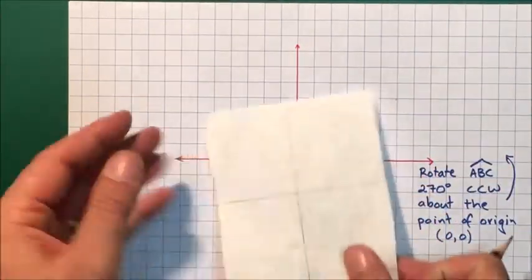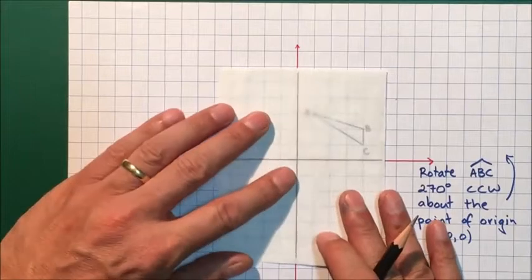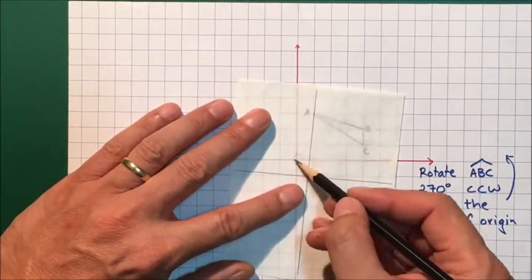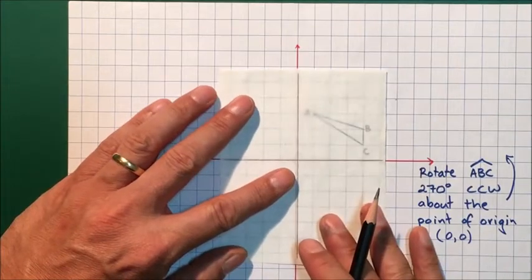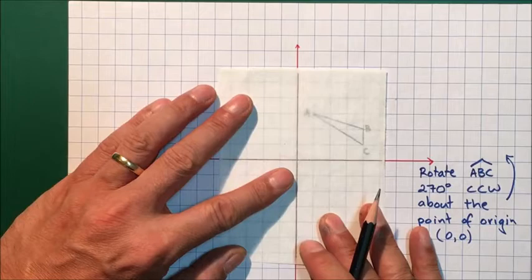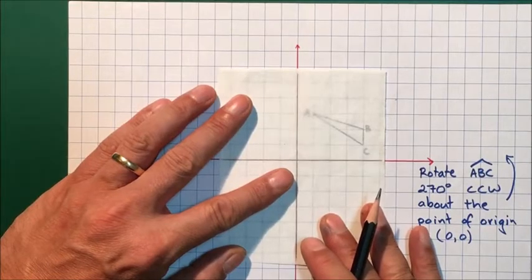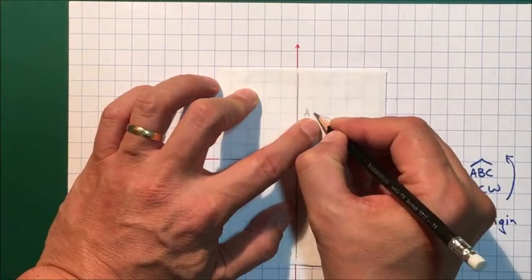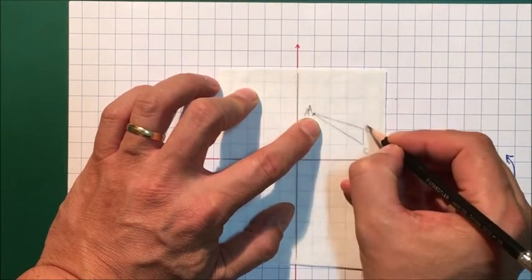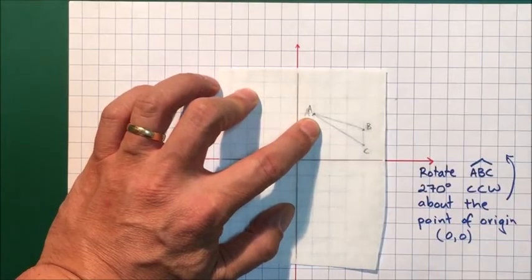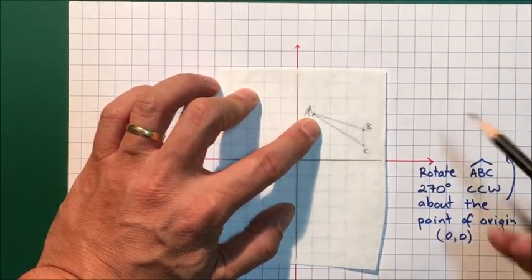Here's my axes. I align everything so this point here, which is (0,0), needs to be aligned with that (0,0) on the axis. Everything's pretty much lined up with the axis underneath. Now I just plot each of the points. This is going to be point A, this here is point B, and this here is point C. All I have to do is rotate